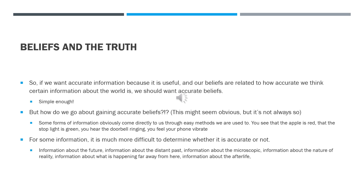Some forms of information are really straightforward — they come directly to us through easy methods that we're pretty sure are reliable. You can just look at an apple and see that it's red, you can see that the stoplight is green and know that you should go, you can hear the doorbell ringing or feel your phone vibrating. These things are rather straightforward because they come to you through your senses. But for some information it's more difficult to determine whether or not it is accurate.